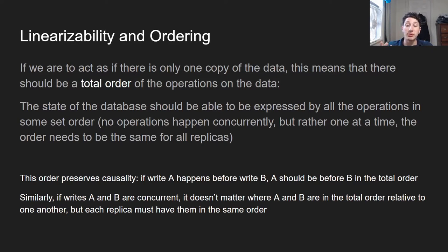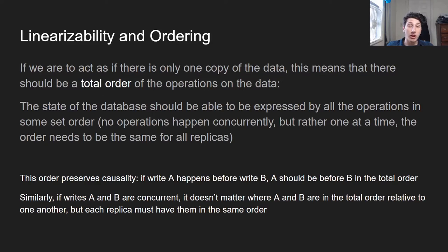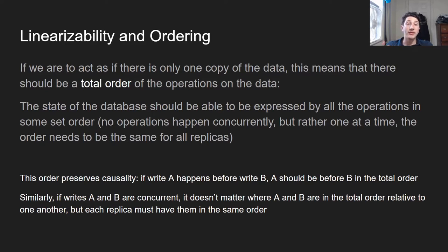This order is going to preserve causality — we know that if one write is coming before another, that write is going to come before the other in the total order. Similarly, if writes A and B are concurrent, it doesn't really matter where A and B are relative to each other in the total order. What matters more is that every single replica has A and B in the same ordering relative to one another. This is different from something like a causal ordering, where you might have just a partial order of operations that preserves causality.